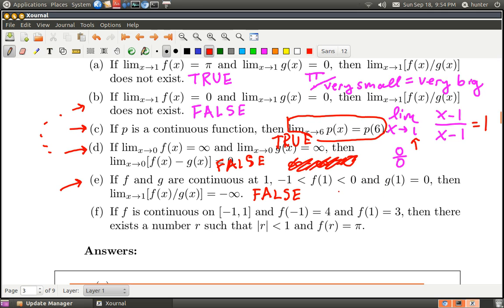The sneaky reason is that maybe g goes to zero from the negative side. Close enough to 1, on top you'll have something negative. g(1) is zero, so as x goes to 1 you'll have something very small on the bottom. But you don't know whether it's a very small negative or positive. Let's suppose it's a small negative.